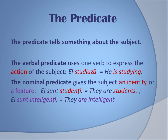Let's move on to the predicate. The predicate, like in English and in so many languages, tells something about the subject. We can have a verbal predicate, which uses one verb to express the action of the subject — 'el studiază', he's studying. And we can have a nominal predicate, which gives the subject an identity or a feature — 'ei sunt studenți', they are students, or 'ei sunt inteligenți', they are intelligent.